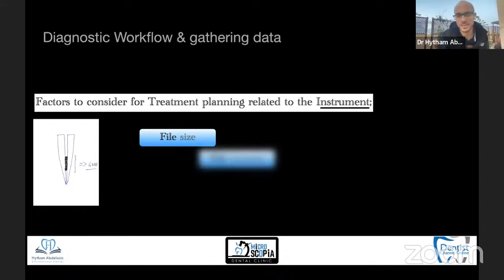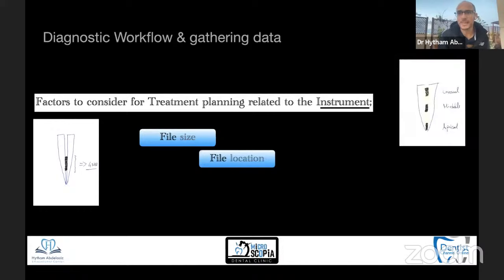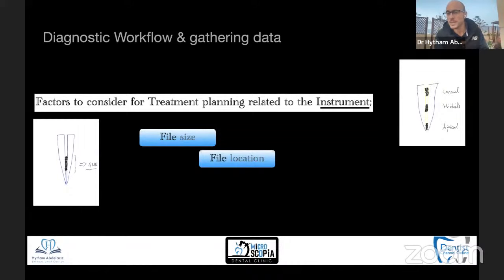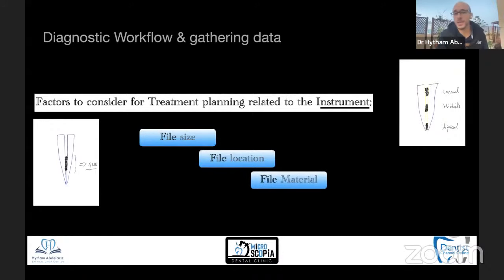File size affects our decision: less than four millimeters is always a retrieval priority; four to ten is always a bypassing priority; above ten becomes a difficult scenario for bypassing and you would go for either a stronger retrieval attempt or a different treatment alternative such as surgery. The second thing is file location. Coronal files are easier to retrieve. Middle-third files are easier to retrieve than apical-third files. The opposite applies to bypassing — it's not advised to bypass a coronal file; always try to attempt to retrieve it even after bypassing, not to exert extra stress on subsequent shaping files or end up with two separated files.